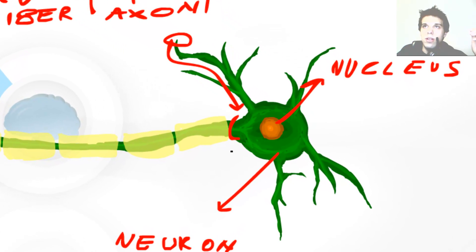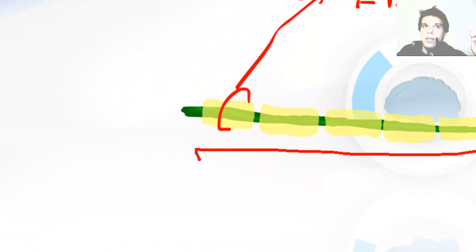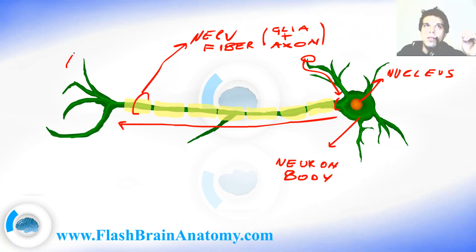The axon transfers the signal from the cell body towards the end of the axon. And the end of the axon is called the axon terminal. The axon can also give side branches but they are not very often.